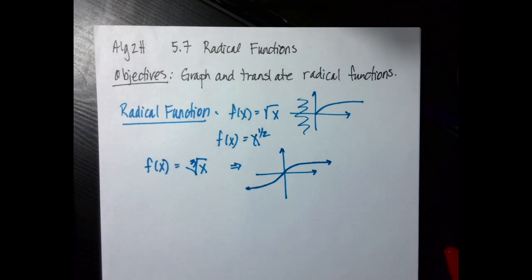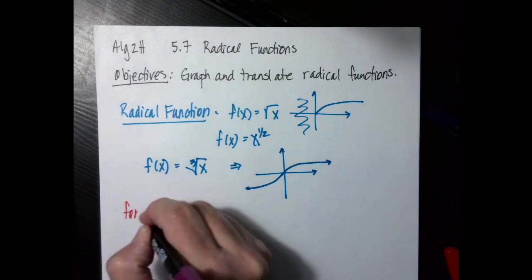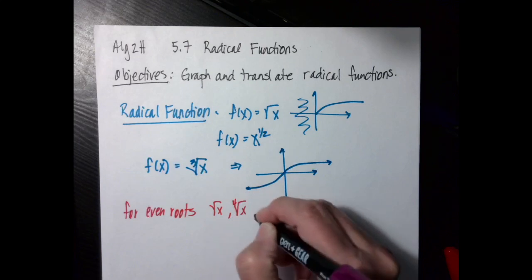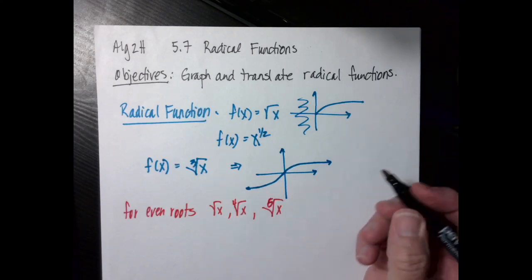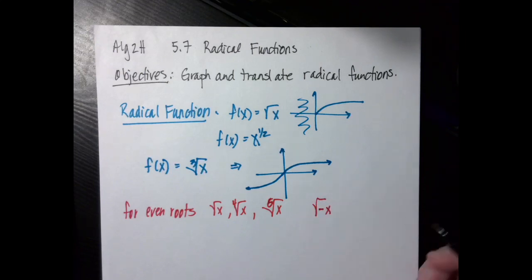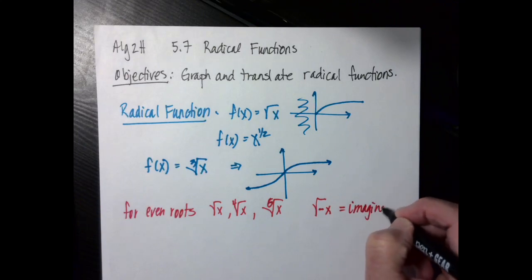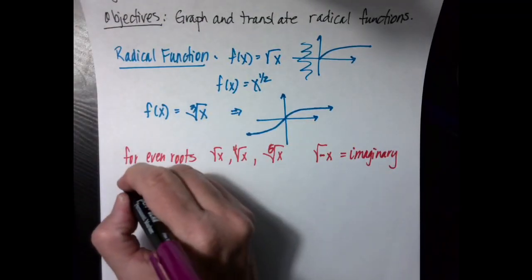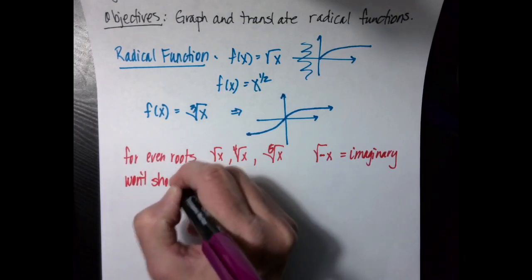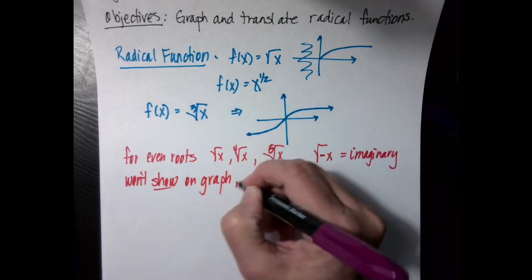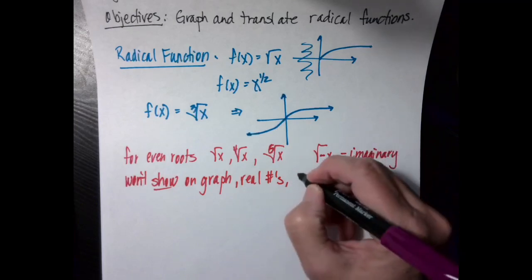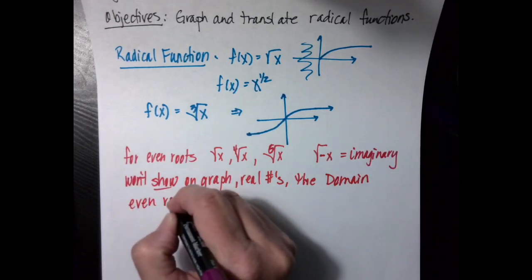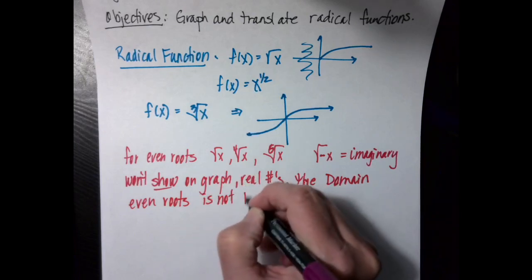Let's talk about some details for even roots — the square root of x, the fourth root of x, the sixth root of x, etc. Remember that if I take the square root of a negative number, it's going to be imaginary, which means it's not going to show up on the real number plane. Since it doesn't show up, the graph only shows real numbers, so the domain of even roots is not all real numbers.